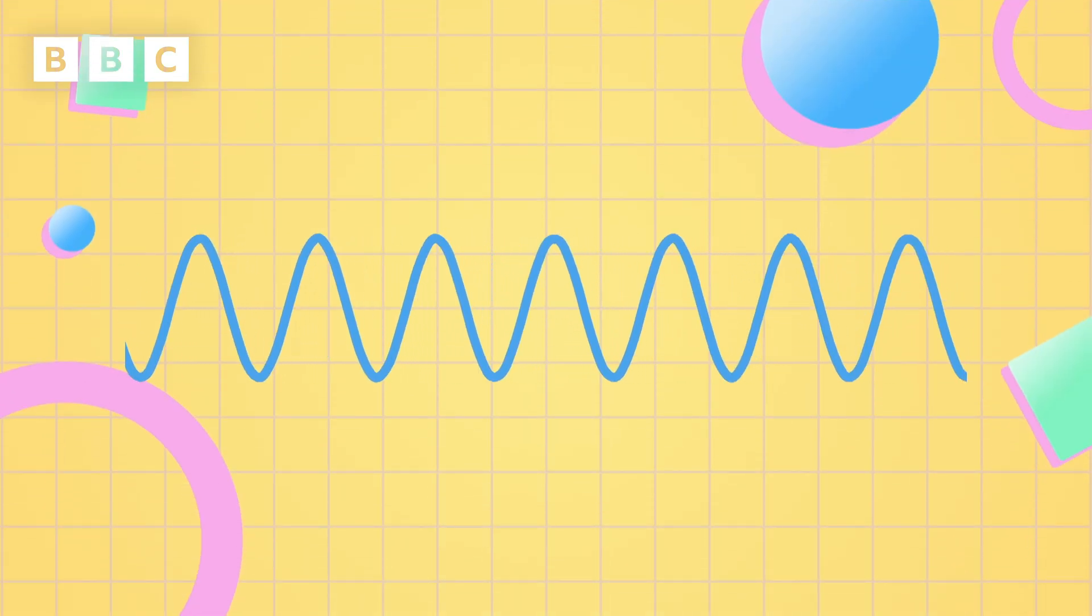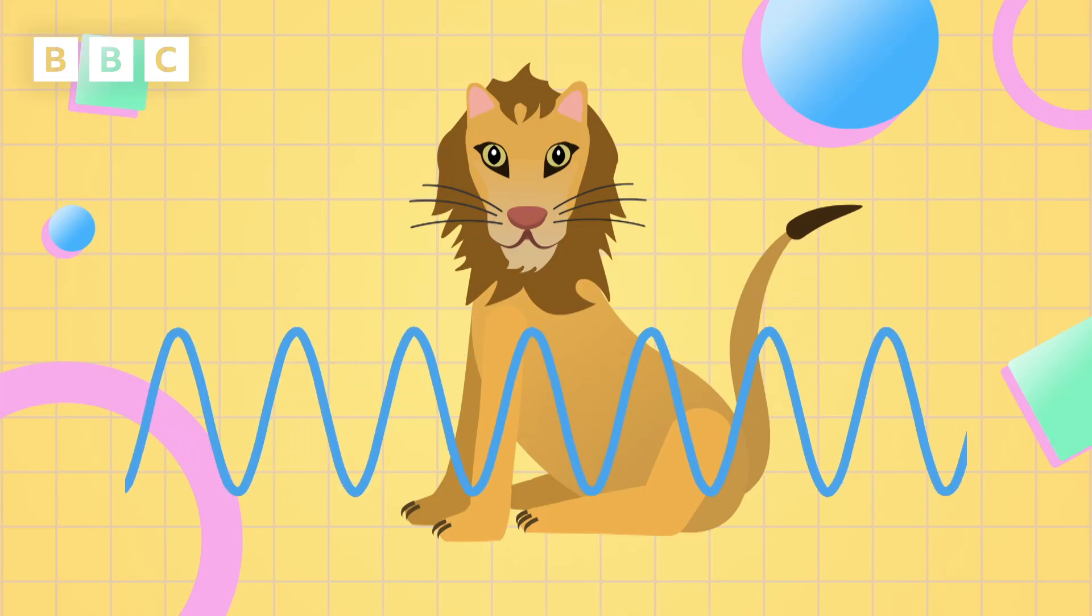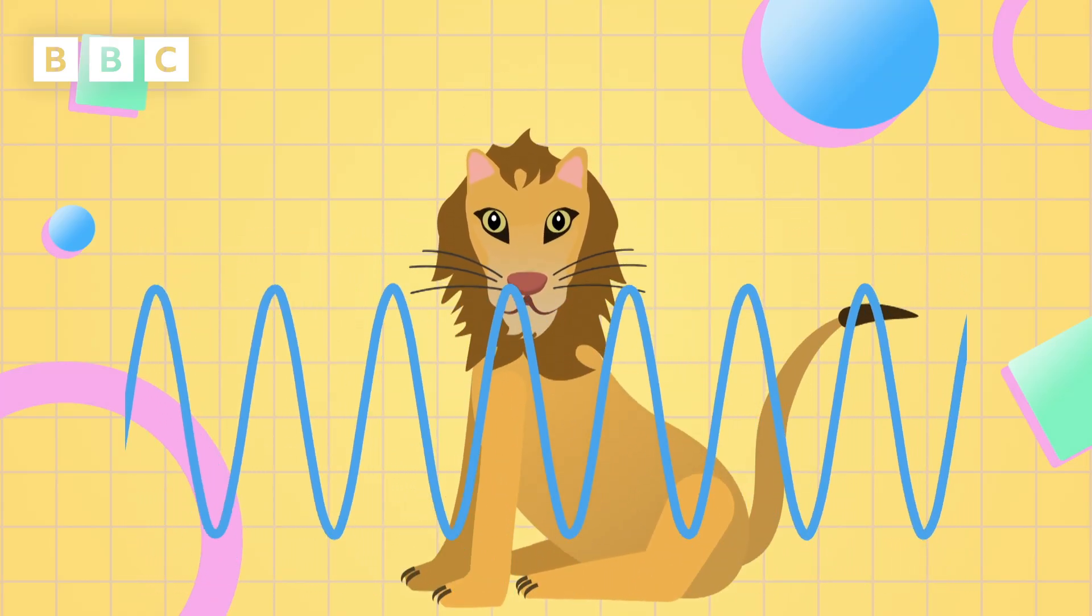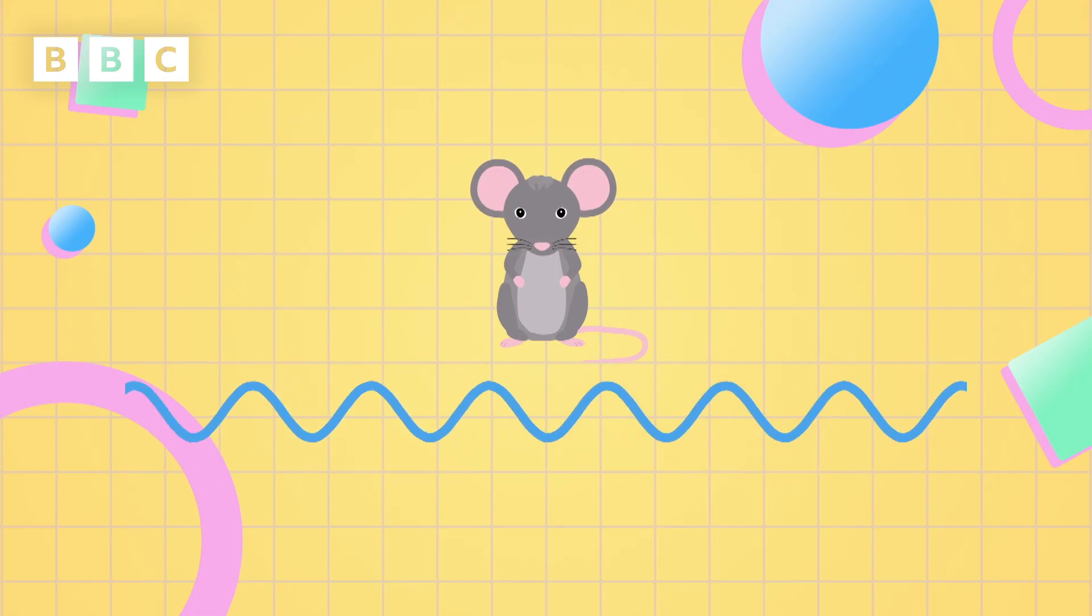These vibrations are called sound waves. And if you were able to see them, they'd look a bit like this. The louder a sound is, the bigger the vibration it makes, which is shown by a bigger sound wave. The quieter a sound is, the smaller the vibration it makes, which is shown as a smaller sound wave.